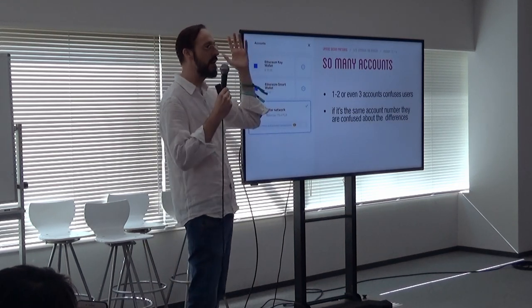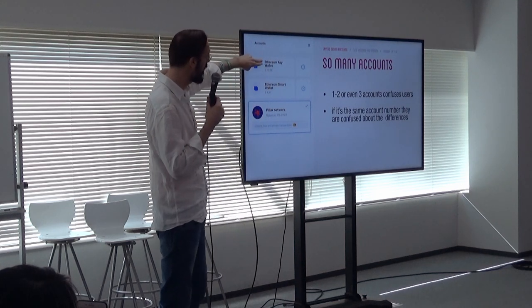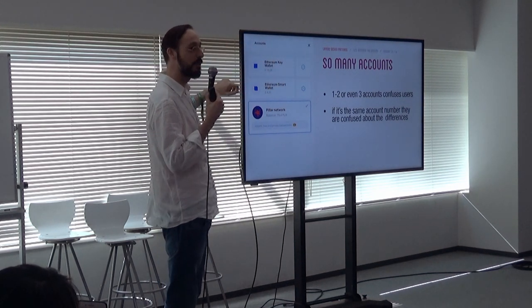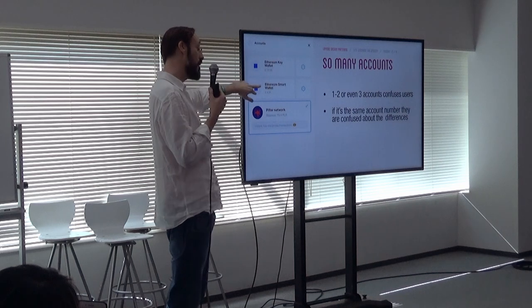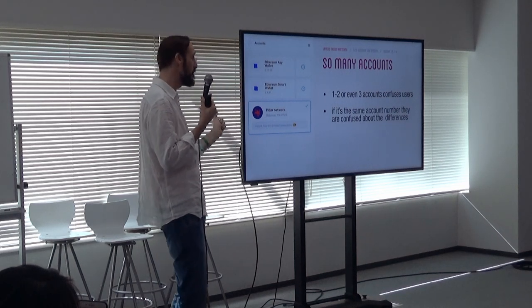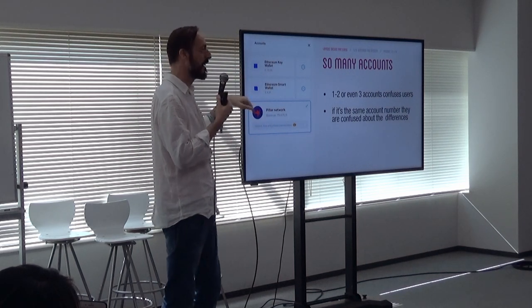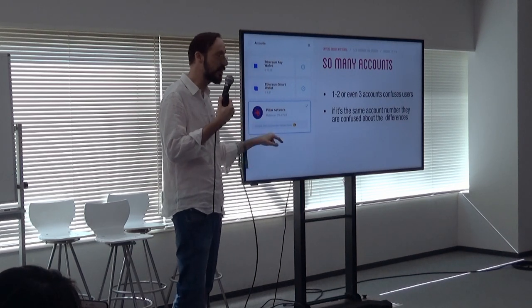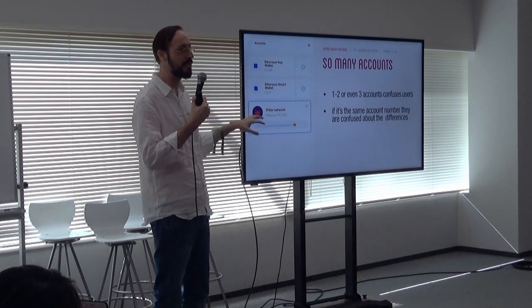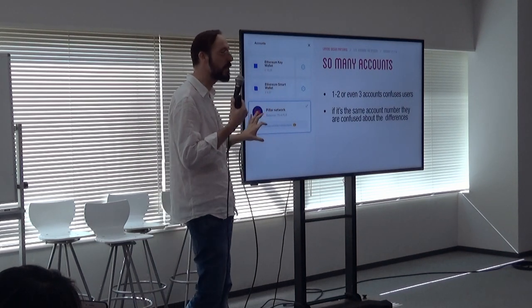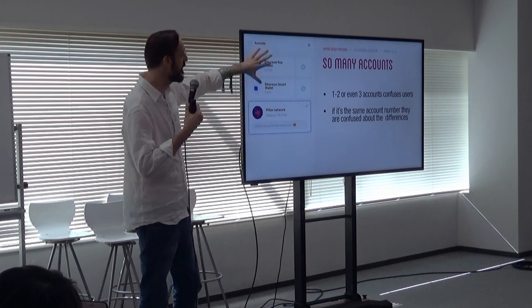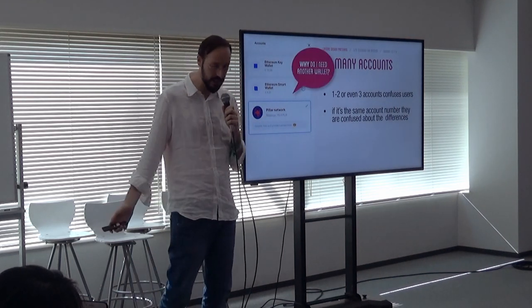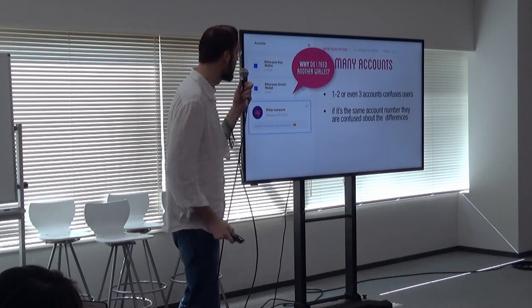Then there are so many accounts. In some cases, you need to have your Ethereum key, your normal Ethereum wallet, then a contract-based account. And in some cases, you need to have your own layer or your own state channel or Plasma card — like a bank account if you want. So these are like three wallets. And people, of course, ask: why do I need another wallet? They repeat this thing. They know they have to do this step, but they don't grasp the meaning.